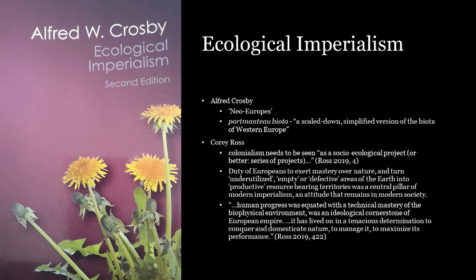We can think of these as the eastern seaboard of the United States, the Cape of South Africa, New Zealand — a European-style ecology that was able to take hold and thrive, obviously at the expense of indigenous biota. Cosby refers to a collection of crops, animals, and pests introduced into these areas as a portmanteau biota — a scaled-down, simplified version of the biota of Western Europe. These were critical to the success of European colonists.